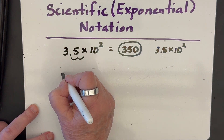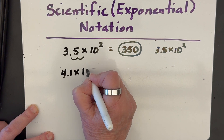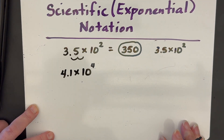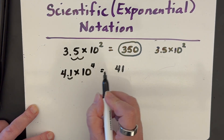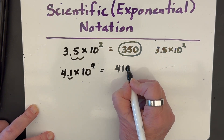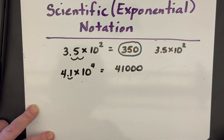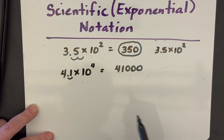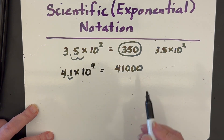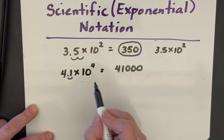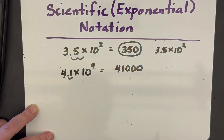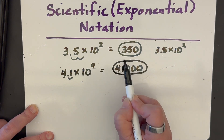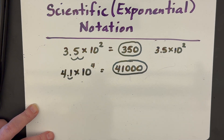Let's try another one: 4.1 times ten to the fourth power. We start with 4 and 1 — that's one place — but we have to move it four total, so we go two, three, four, filling in zeros. It's a big number because of the positive exponent. A handy trick: if you only have one digit past the decimal, the number of trailing zeros equals your power minus one. So the answer is 41,000.